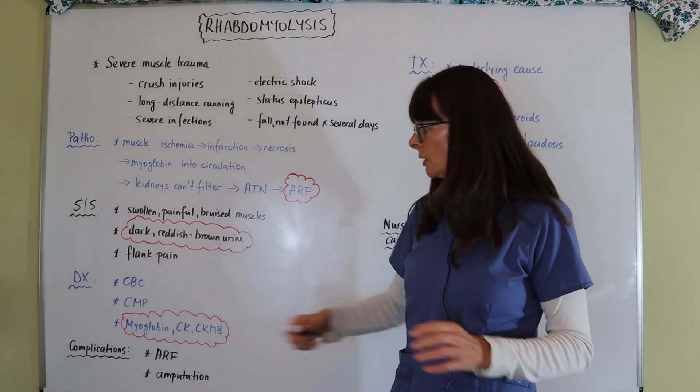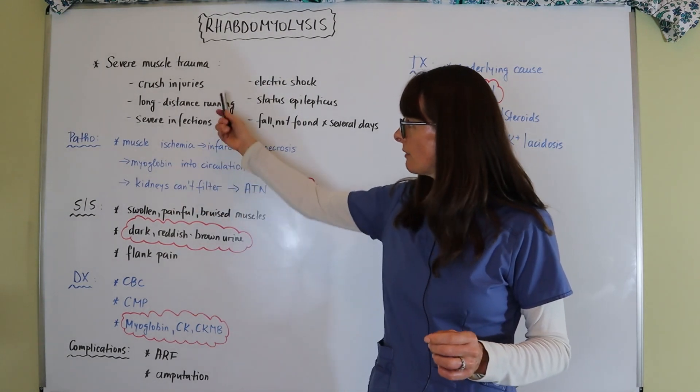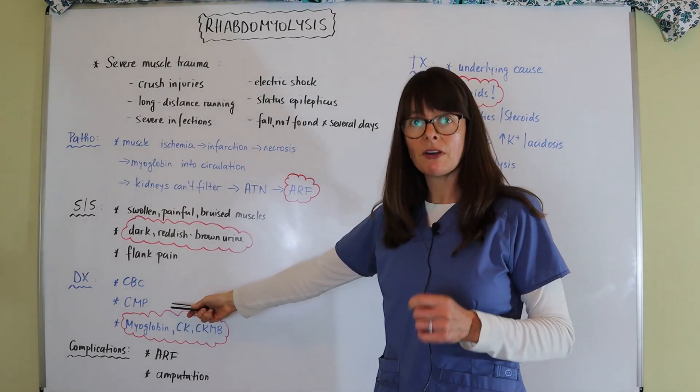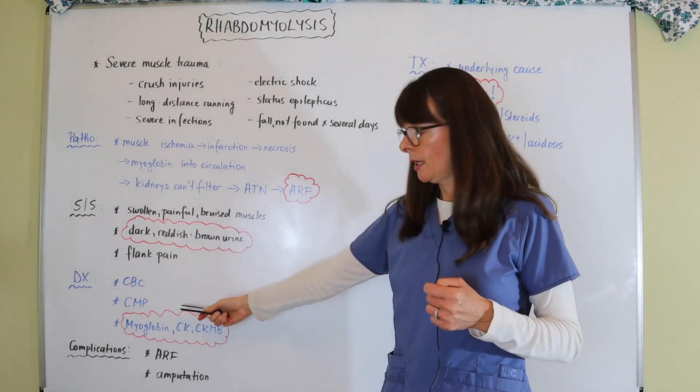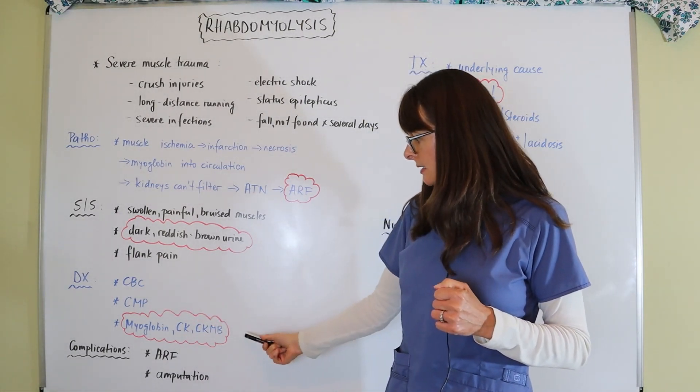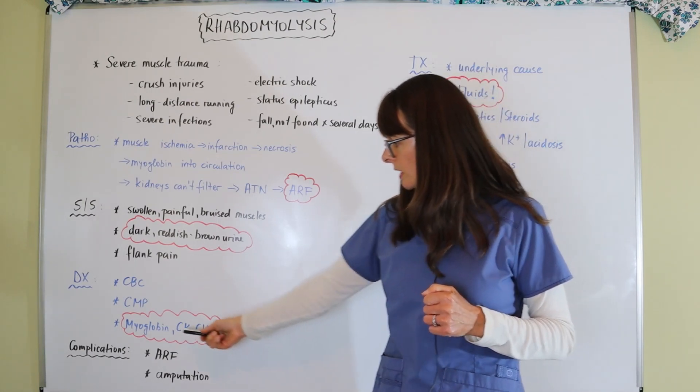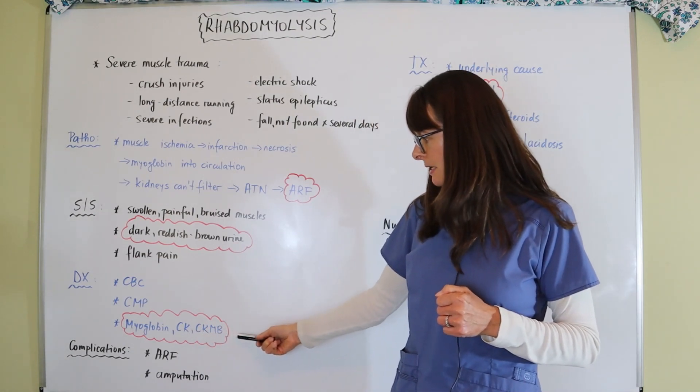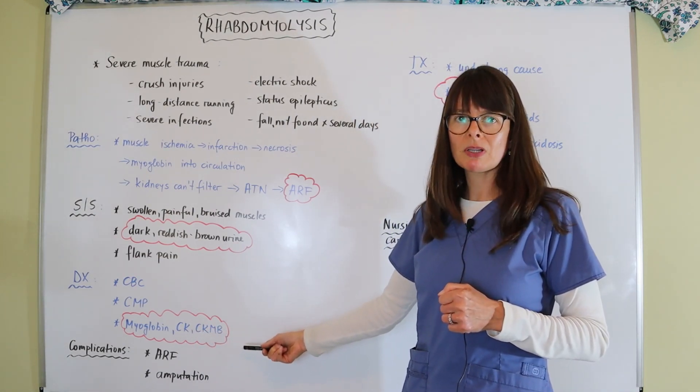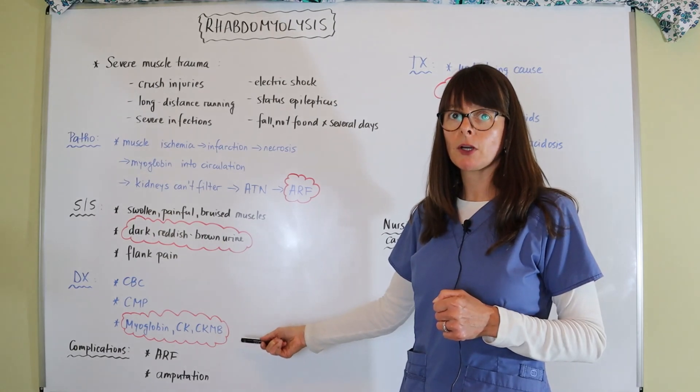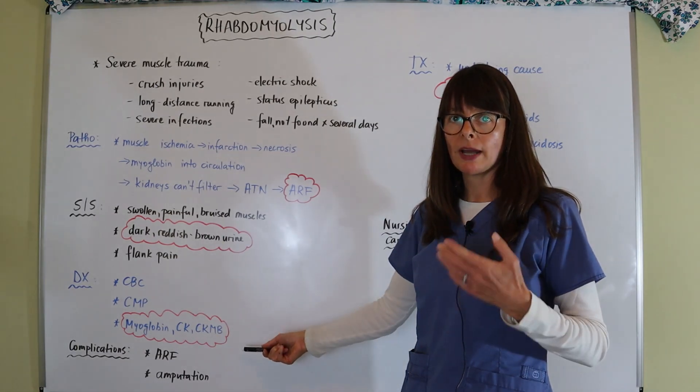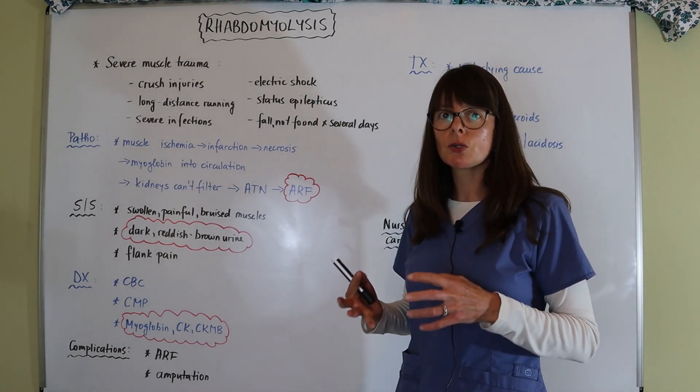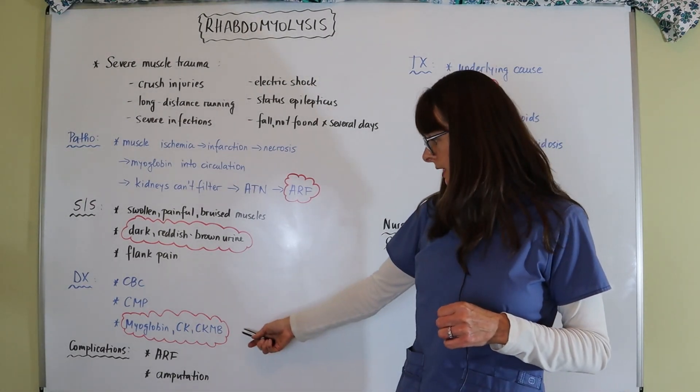Diagnostic tests: we certainly want to check CBC because we have all these issues here, maybe even an infection. CMP, check kidney function, check liver function, all those things. And then specifically here for rhabdomyolysis, we can check myoglobin, CK, and CKMB. Note that we are not checking troponin here because that is cardiac specific and the cardiac muscle has not had any damage here. So these three muscle markers or tissue damage markers is what we can measure.